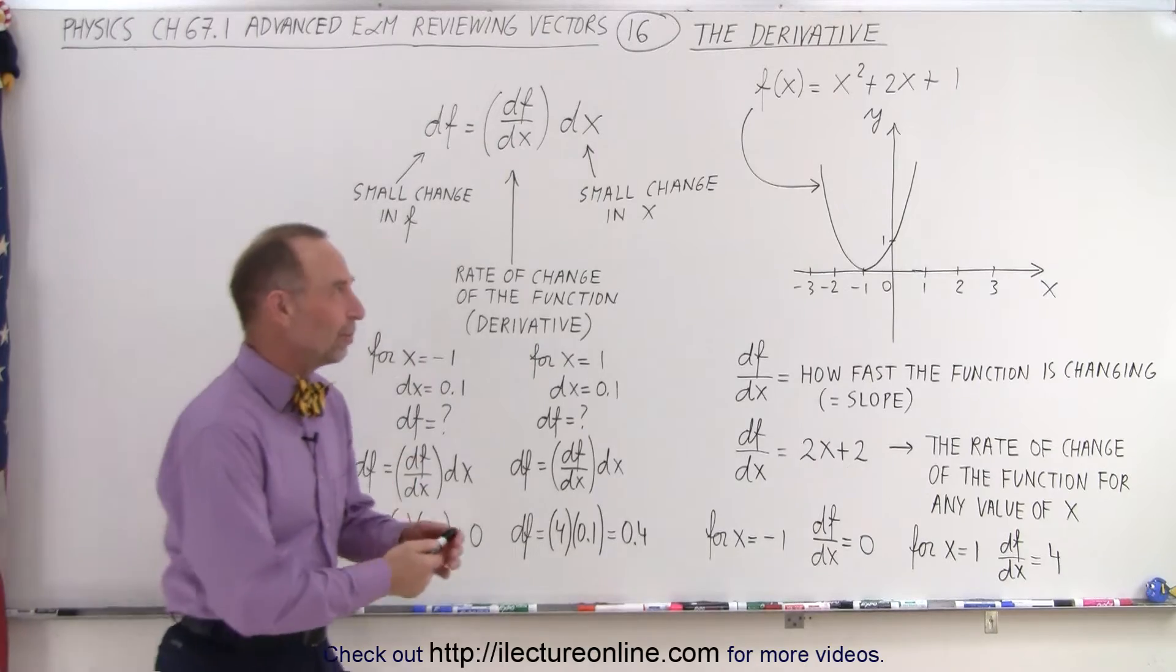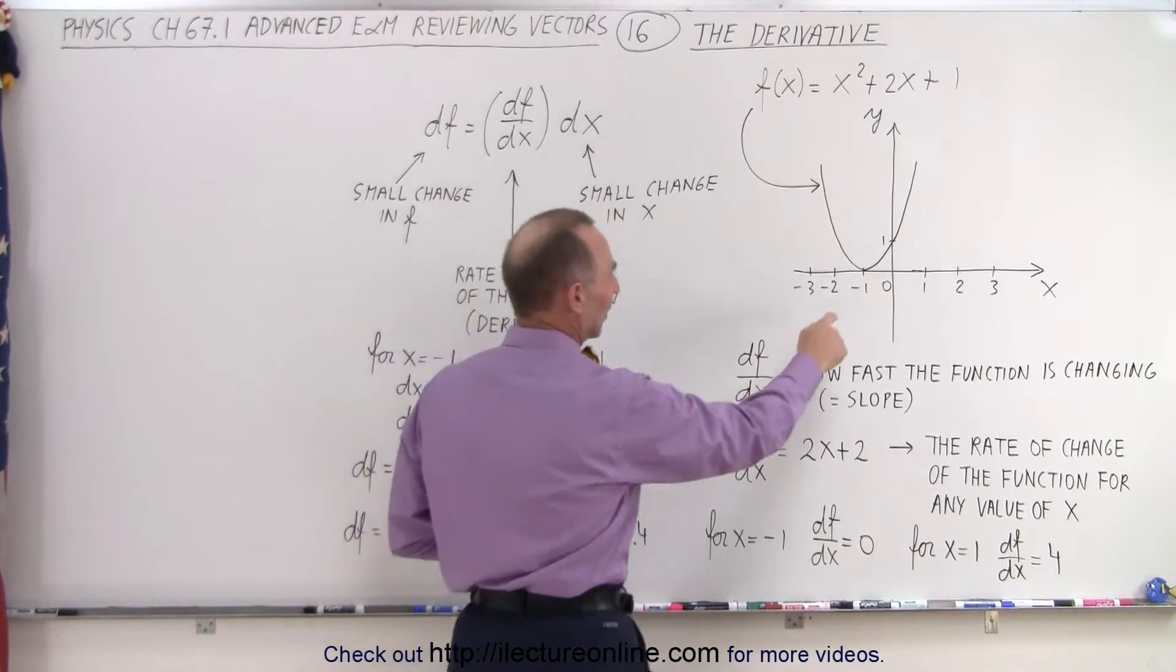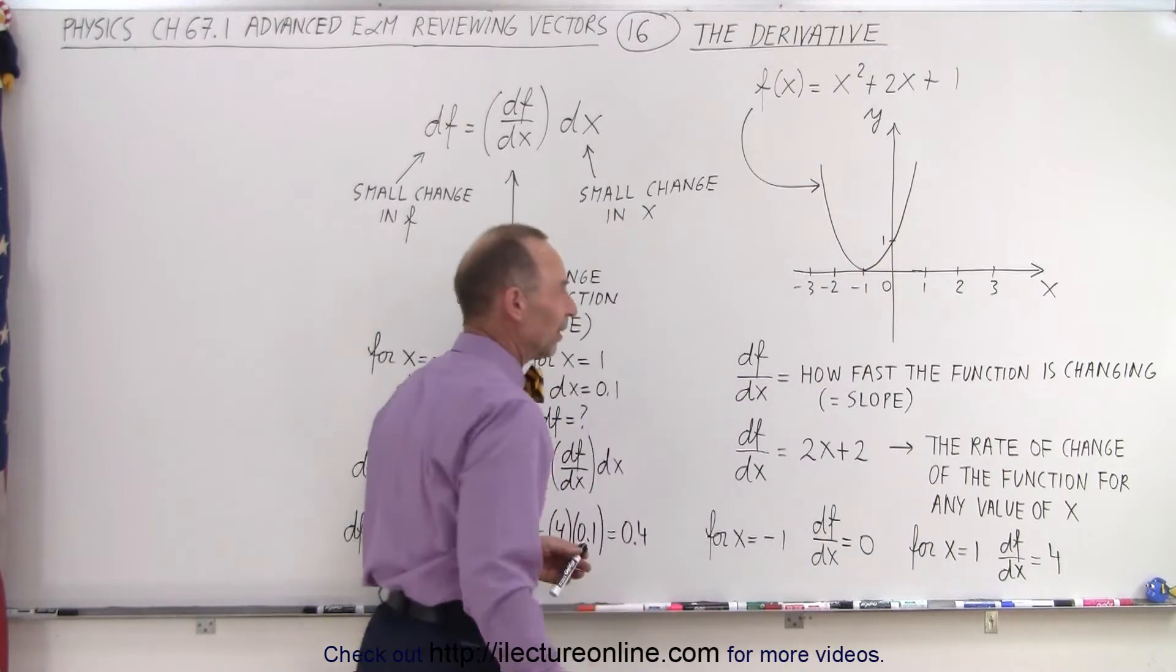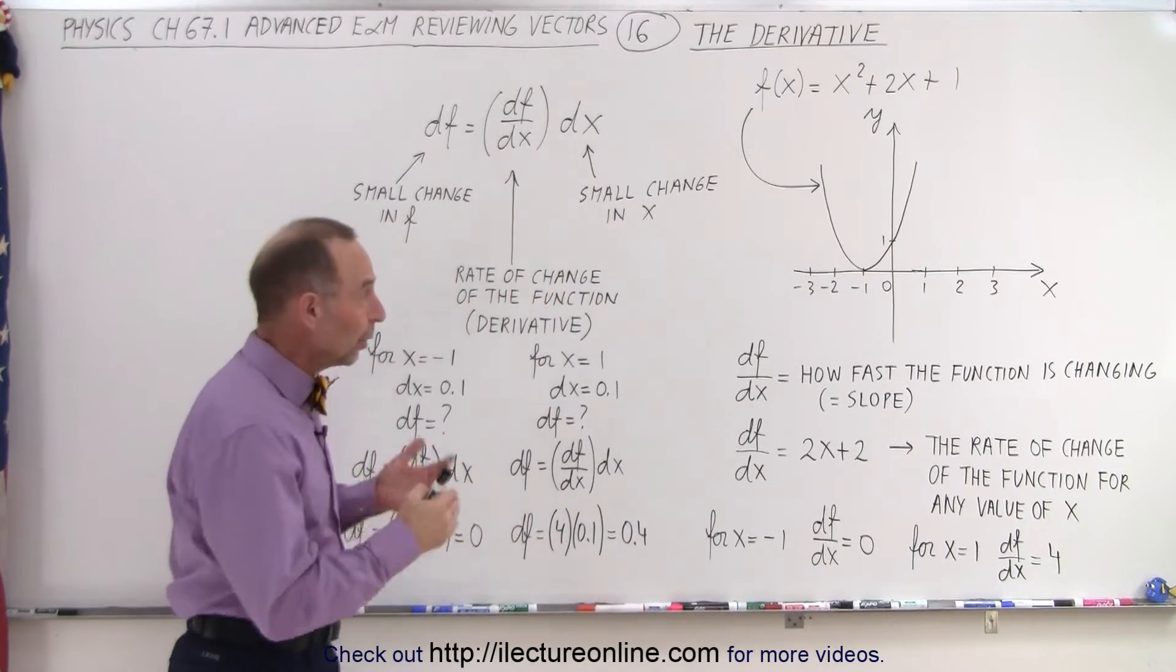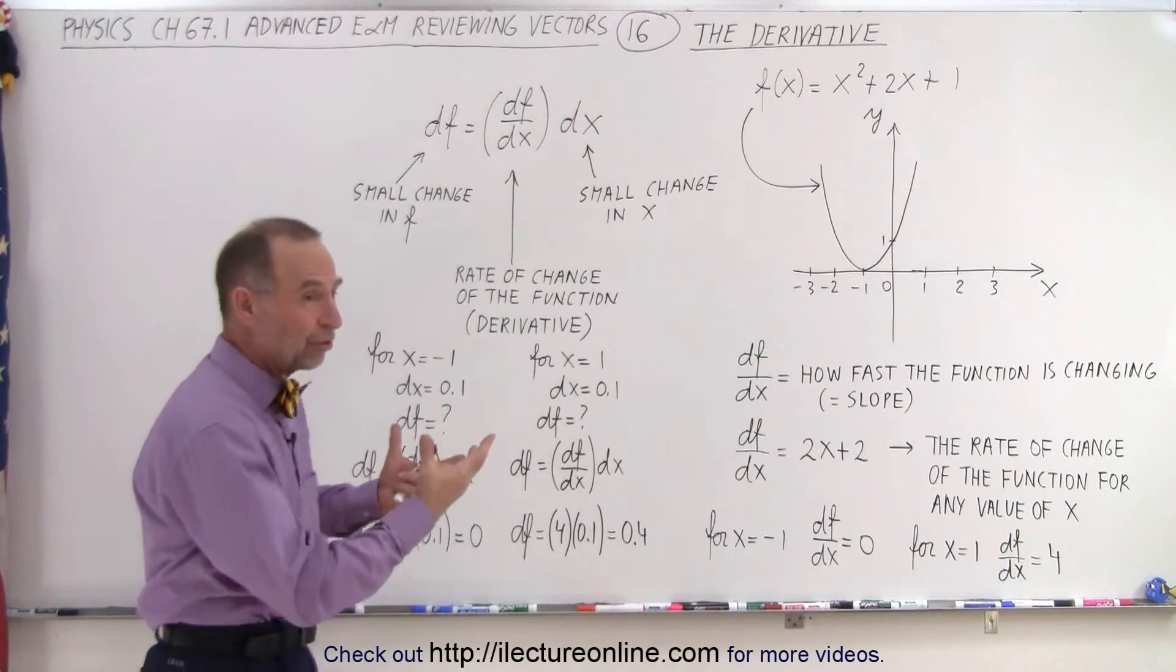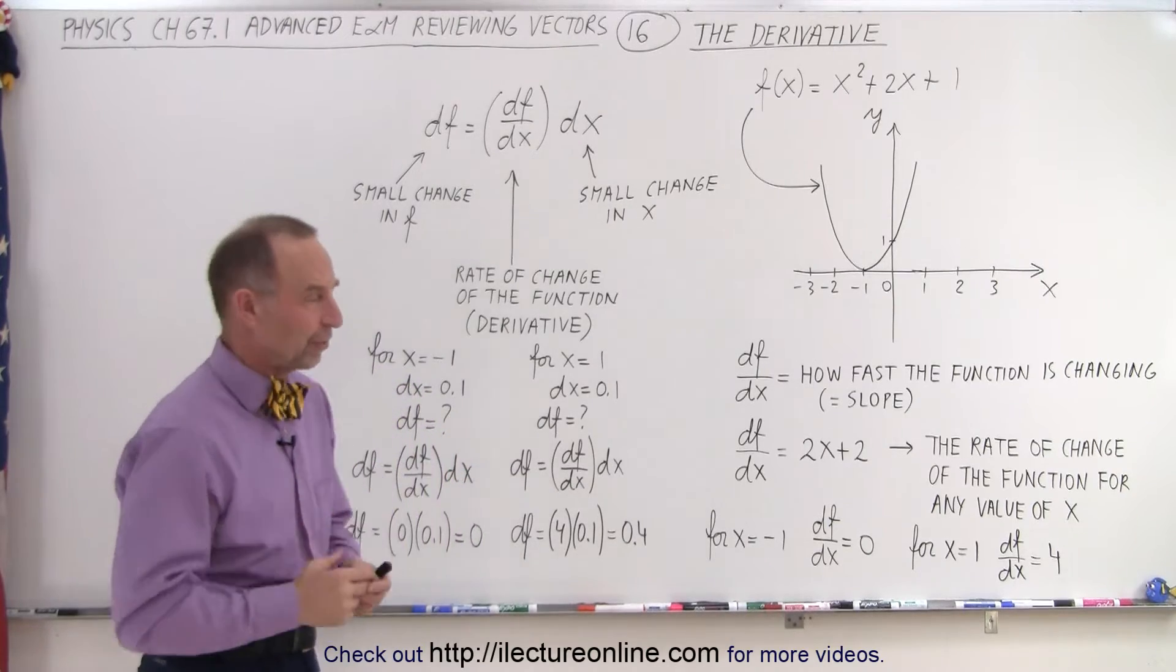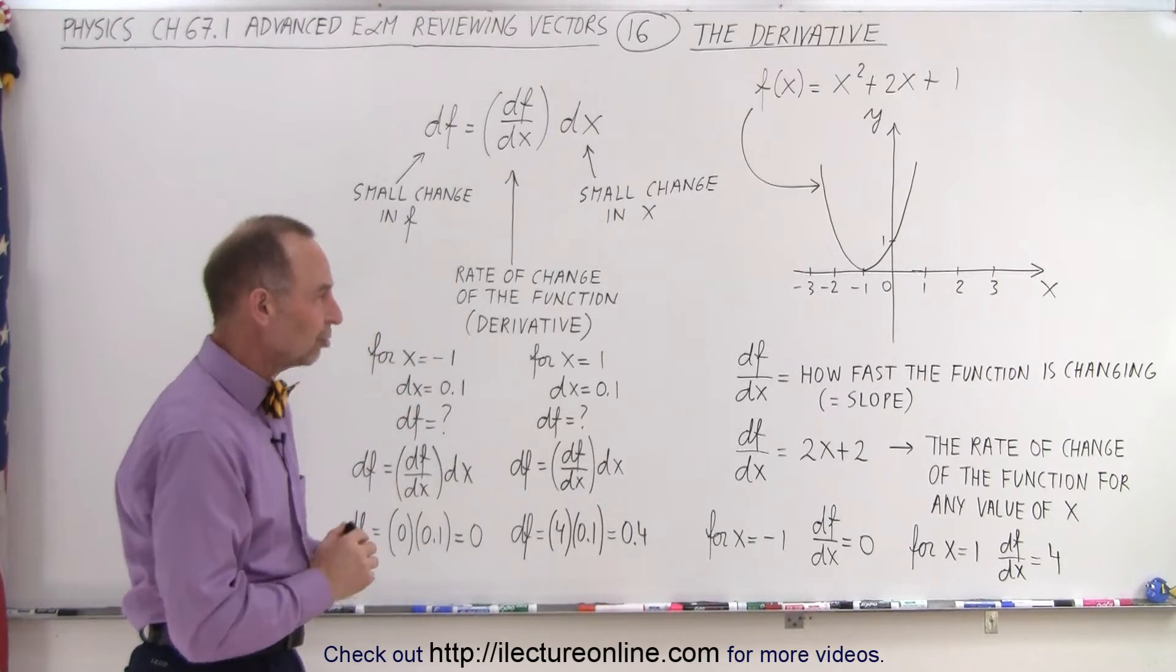So here's a simple function. It's a scalar function, x squared plus 2x plus 1. We have the vertex right here at negative 1 and 0. And what do we mean when we say the derivative of that scalar function? Of course, we're doing this in preparation when we're going to look at the del operator and how it operates on vector functions so we can see the relationship.